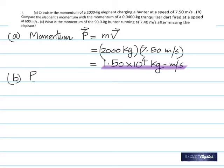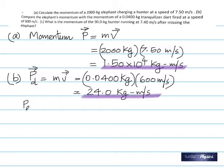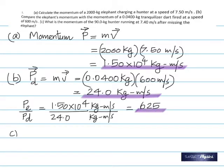Part B: the tranquilizer dart. Mass is given. Multiply the mass with the velocity to get the momentum of the dart — 24. To compare, take the ratio of the elephant's momentum to the momentum of the dart. The elephant's momentum goes in the numerator. Divide them; the units cancel since it's a ratio. The answer is 625.